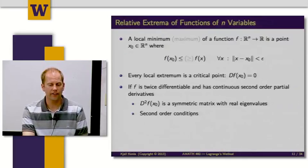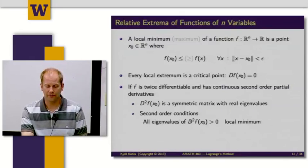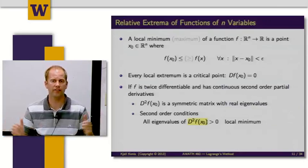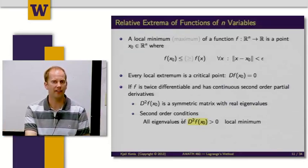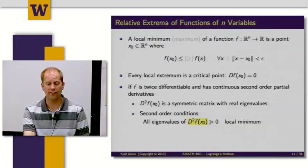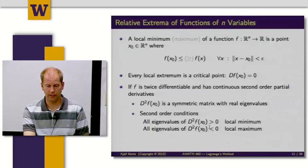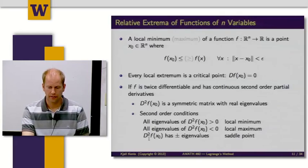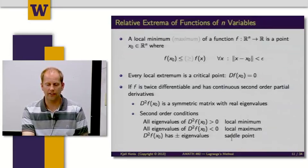The second-order condition for a function of n variables: I compute the Hessian, evaluate each of those functions at the point x0, then find the eigenvalues of that matrix. If all of the eigenvalues are strictly greater than 0, that corresponds to a local minimum. If all of the eigenvalues are strictly less than 0, that corresponds to a local maximum.